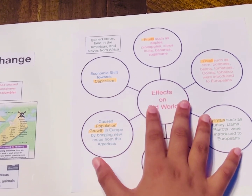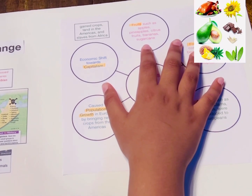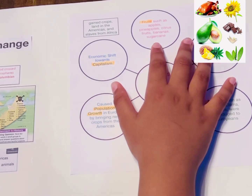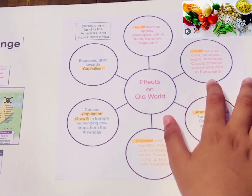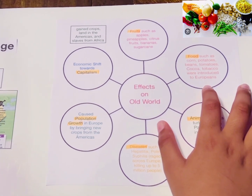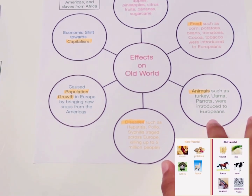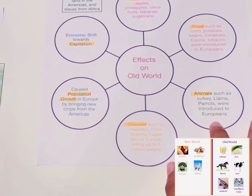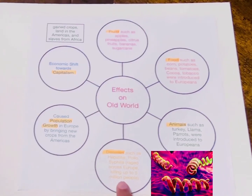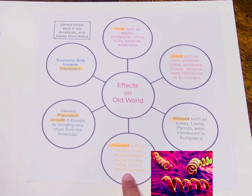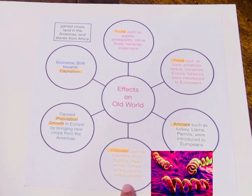Now we'll move to the effects on the old world. Fruits such as apples and pineapples were introduced to the old world. Crops such as corn, potatoes, beans, tomatoes, cocoa, and tobacco were introduced to the Europeans. Animals such as turkey, llama, and parrots were introduced to the Europeans too. Diseases such as hepatitis, polio, and syphilis ranged across Europe, killing 5 million people.